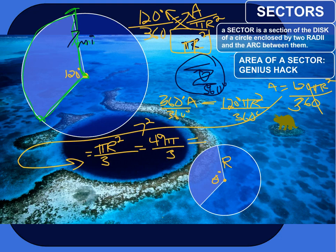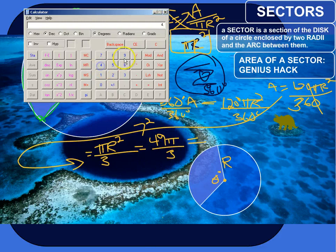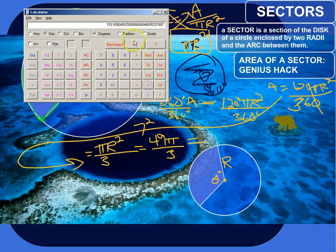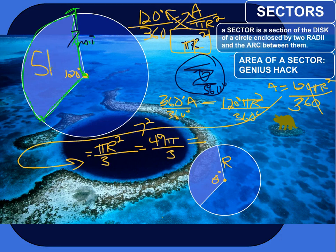Let's grab the calculator to find the decimal equivalent. We've got 49 times pi — if you don't have a pi button on your calculator, estimate it as 3.14 — divided by 3. So the area of the sector is roughly 51 square miles.